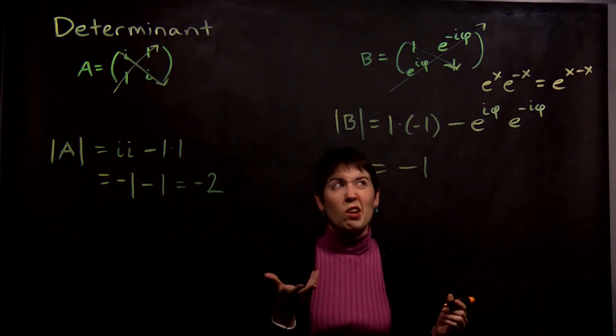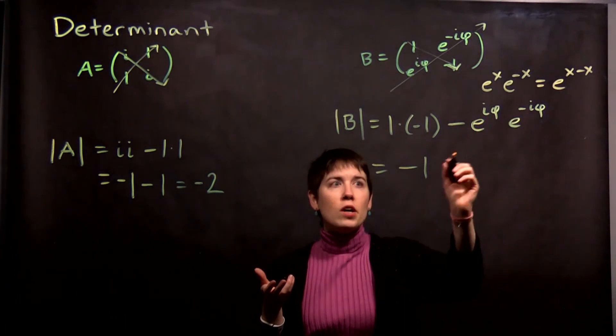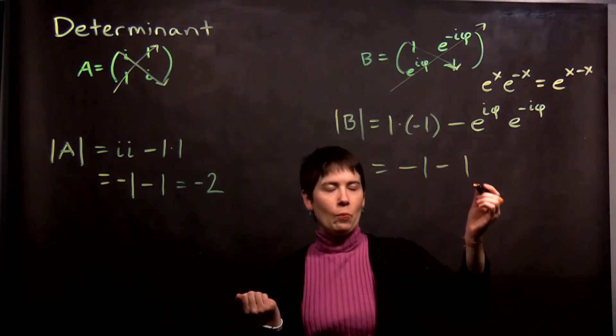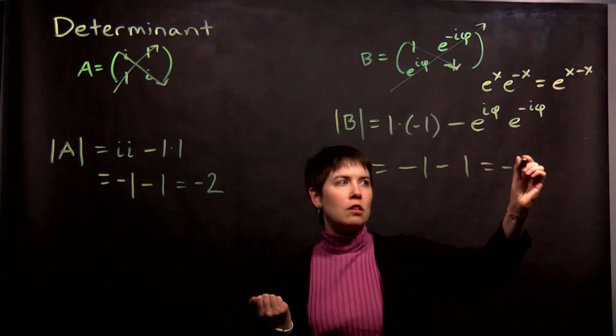So this becomes x minus x. Well, e to the 0 is just 1. So this is going to become 1, so this is negative 1, minus 1, again negative 2.